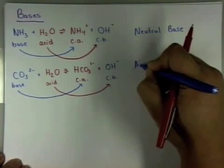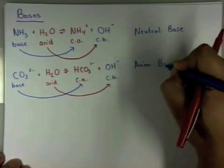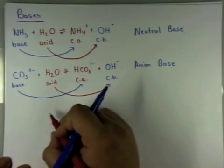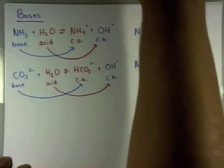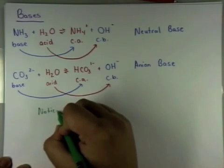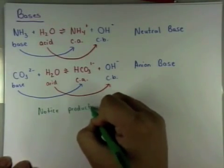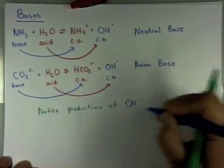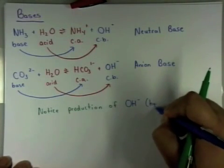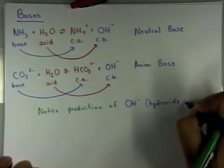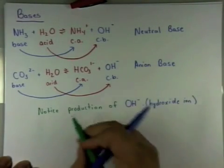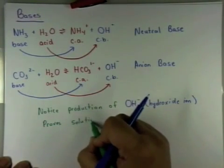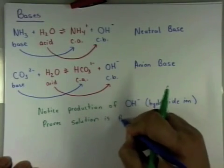If you want, you can always think of a base, when it forms a conjugate acid, it gains an H+. An acid, when you form a conjugate base, it loses an H+. Okay, I'm going to make a note here. And note that, if you notice the product this time, it's OH-. So the production of OH- proves that it is a basic solution, or it involves a base. And OH- is known as hydroxide ion. Y'all should be pretty familiar with that by now. Hydronium is a little bit newer terminology. H3O+ hydronium.